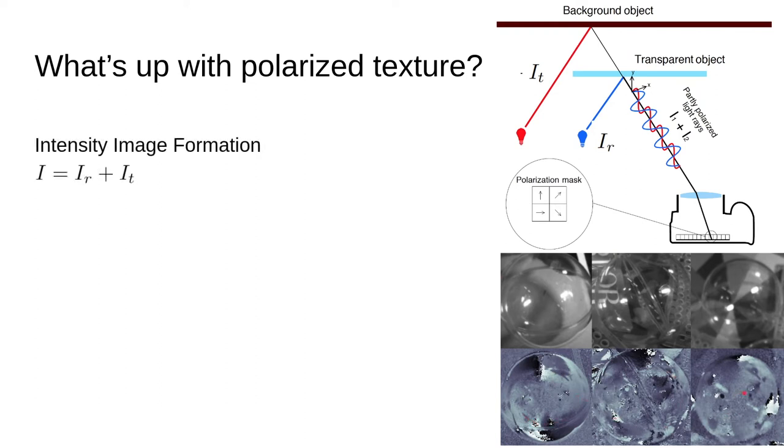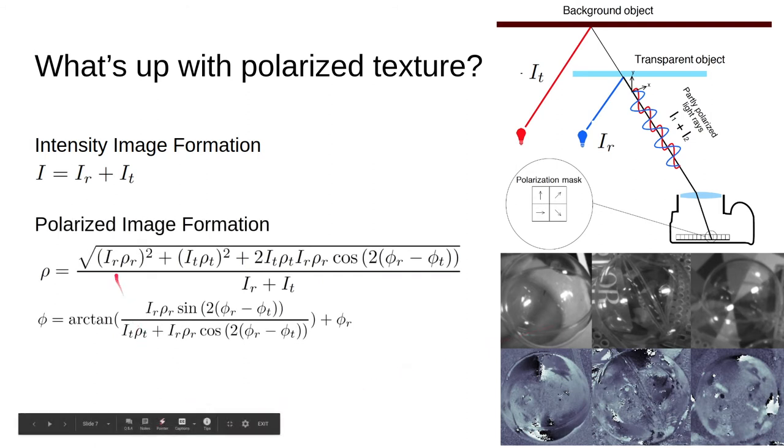It comes from the image formation. In an intensity image all you're doing is summing the transmitted ray with the reflected ray. The problem is in a transparent object the transmitted ray can have a very strong texture and the reflected ray can be very small so you end up masking the texture. However the polarization image formation actually allows us to separate these or at least weight the reflected ray much more because of the amount of polarized light. Again we go into a lot more detail in the paper so feel free to check that out for more info.